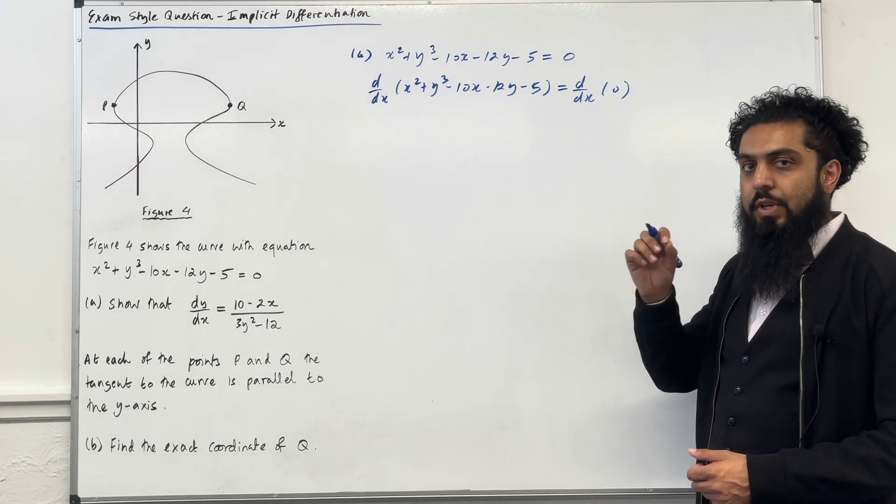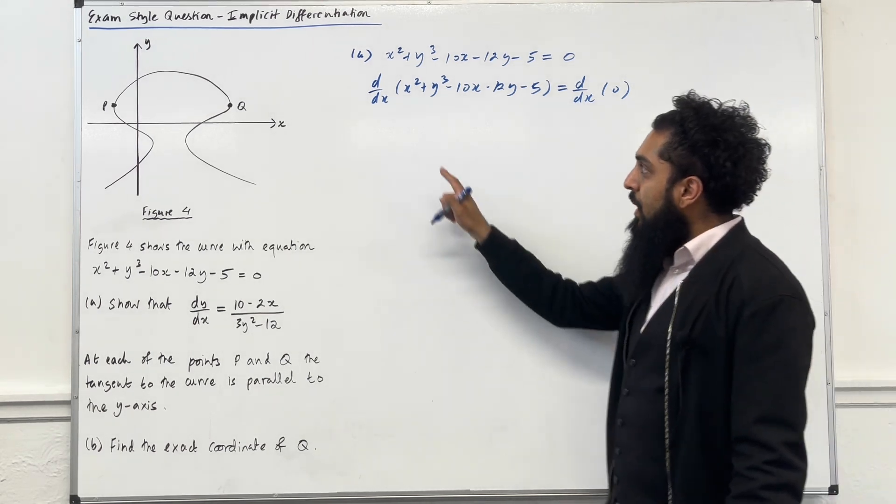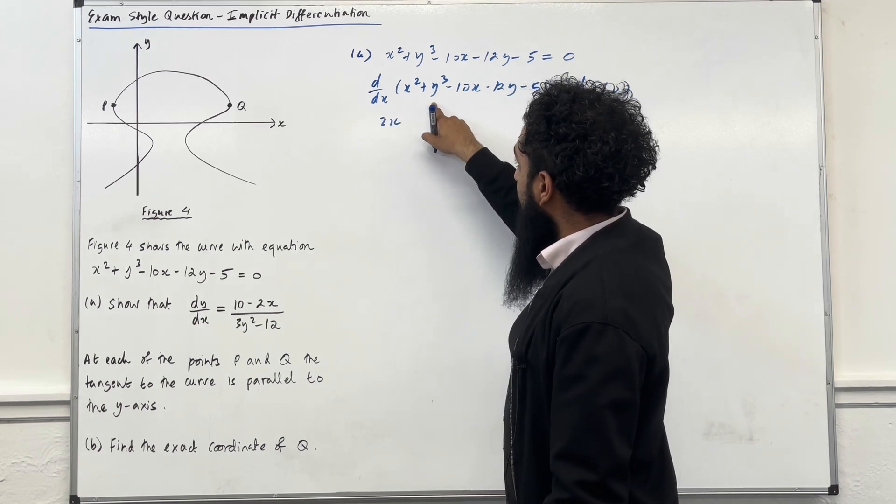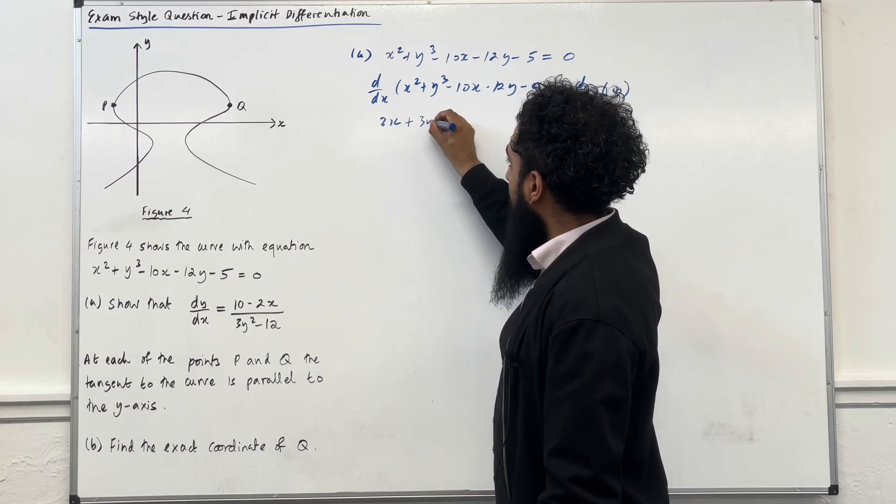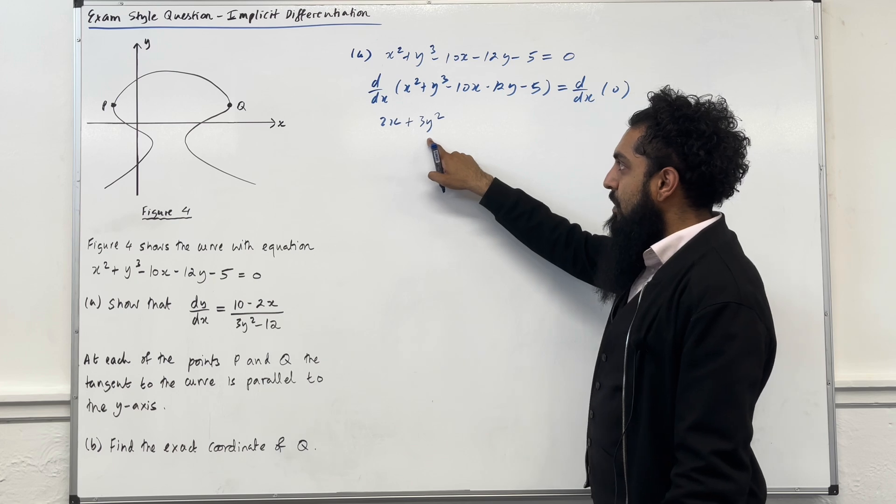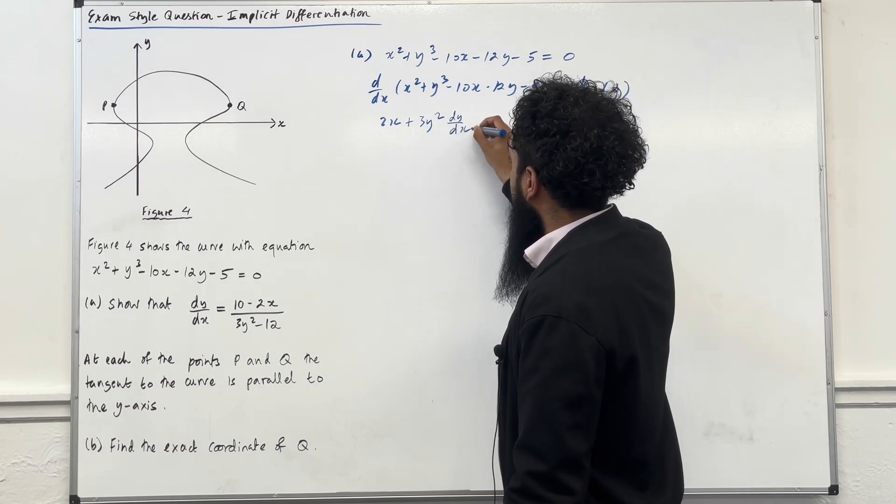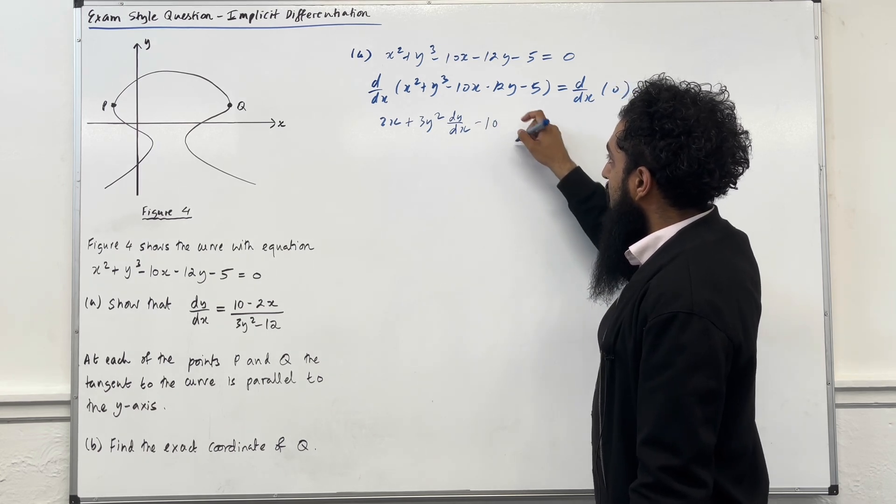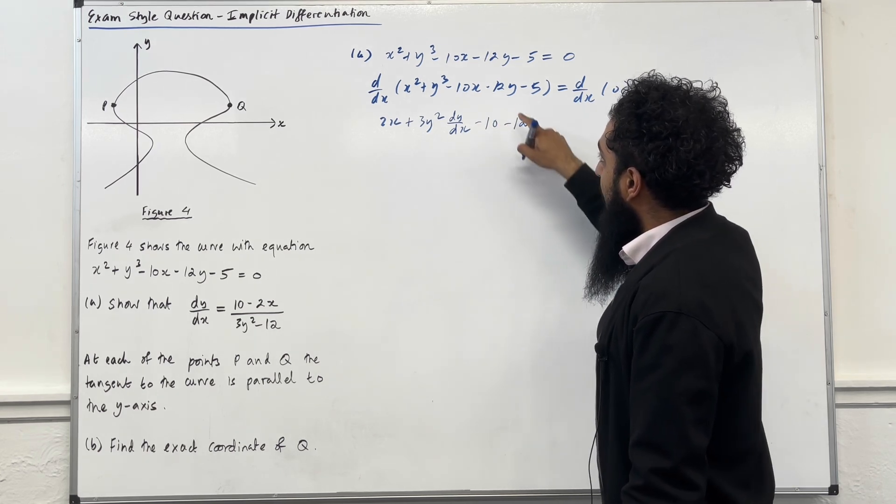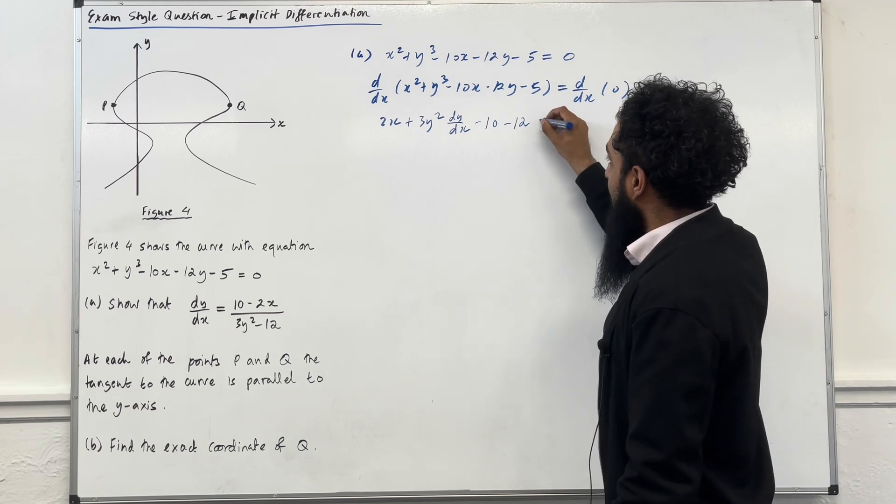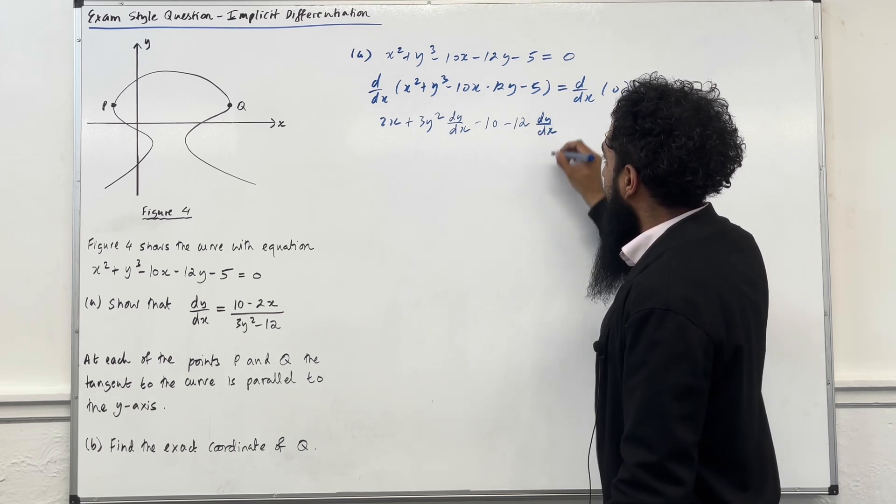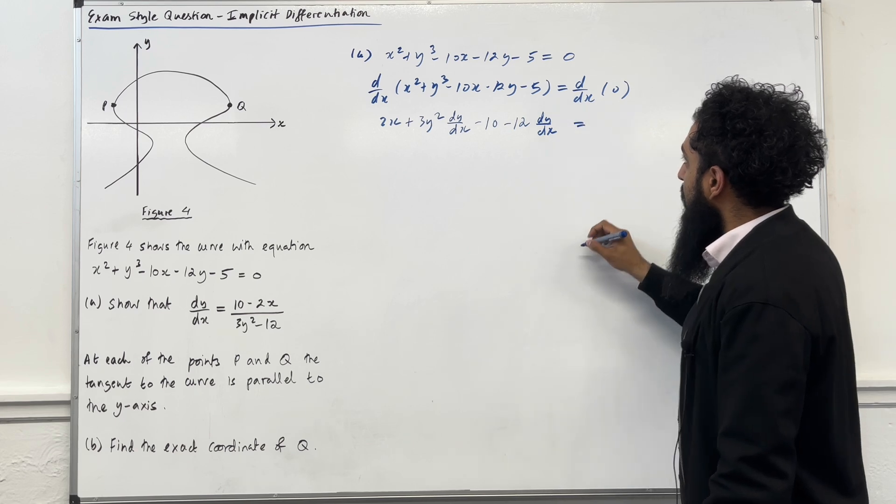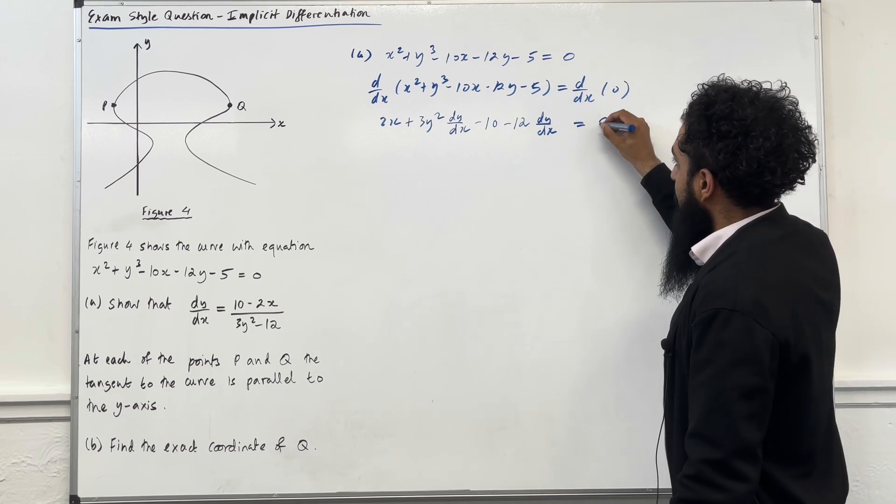Now I'm going to use term by term differentiation. The first term over here differentiates to 2x. The second term differentiates to 3y squared. But because it's a y term, I need to stick in dy over dx. The third term differentiates to minus 10. The fourth term differentiates to minus 12. Again, because it's a y term, I need to stick in dy over dx. And the final term differentiates to 0 equal to the 0 differentiates to 0.